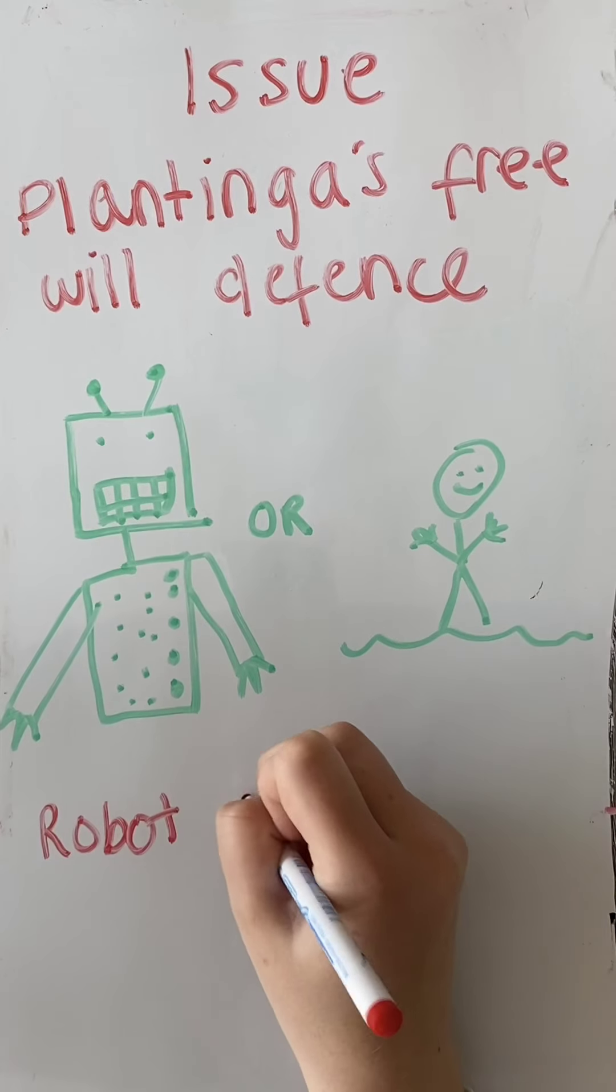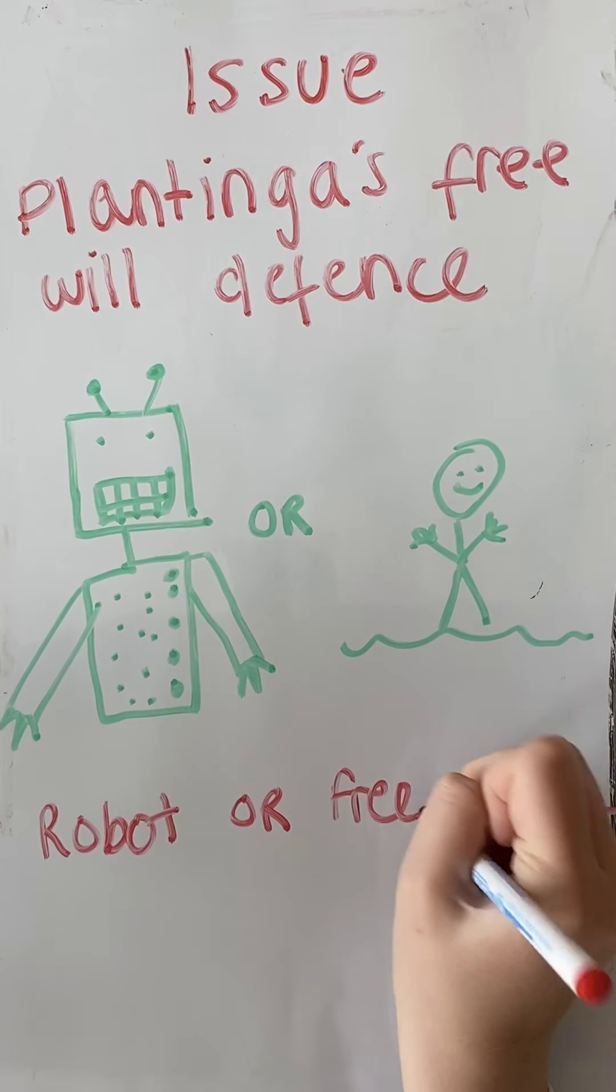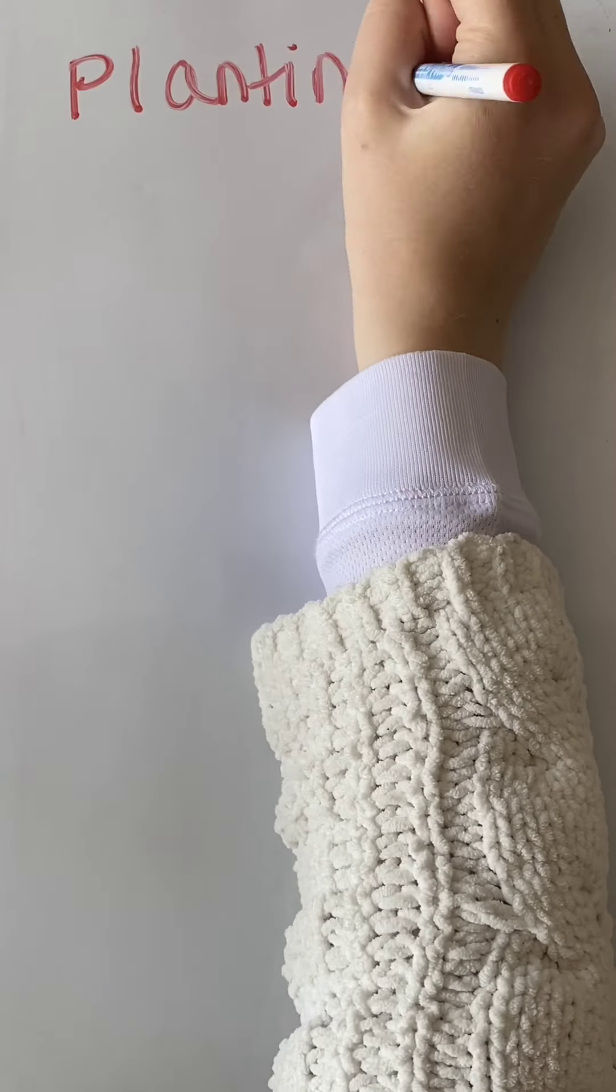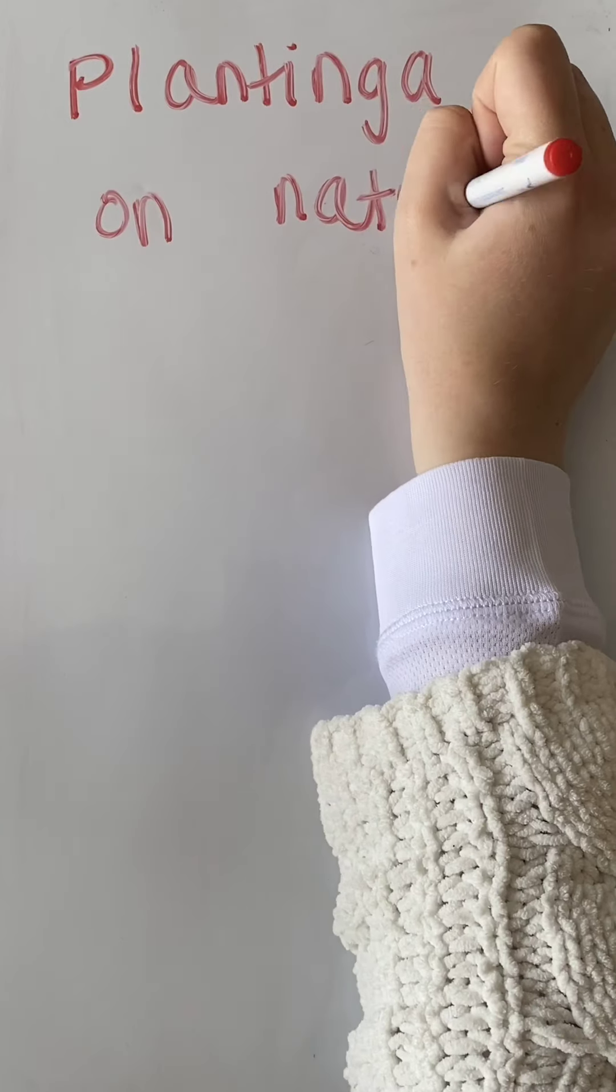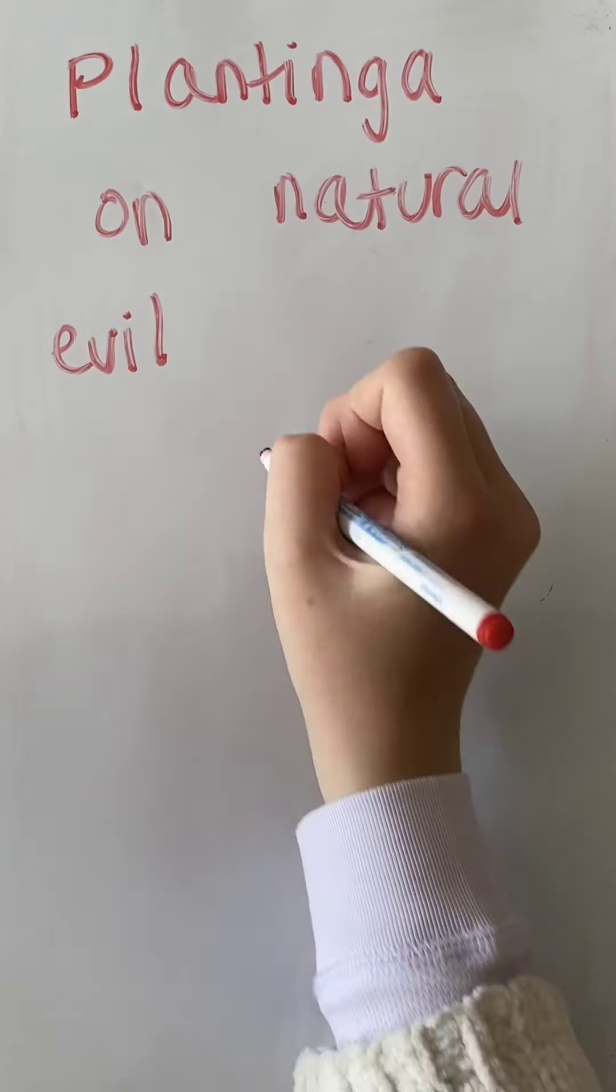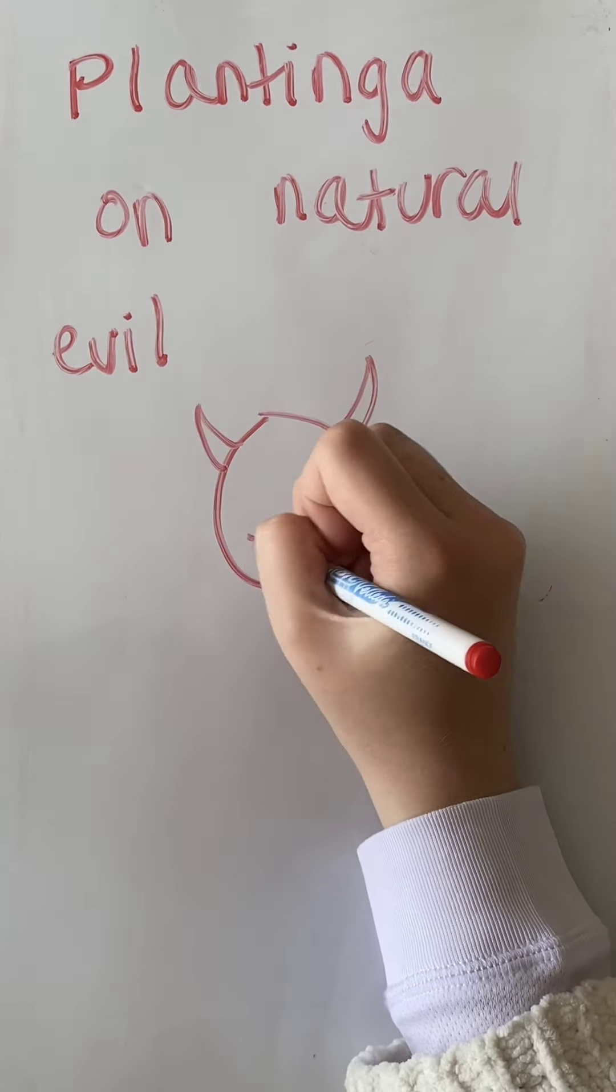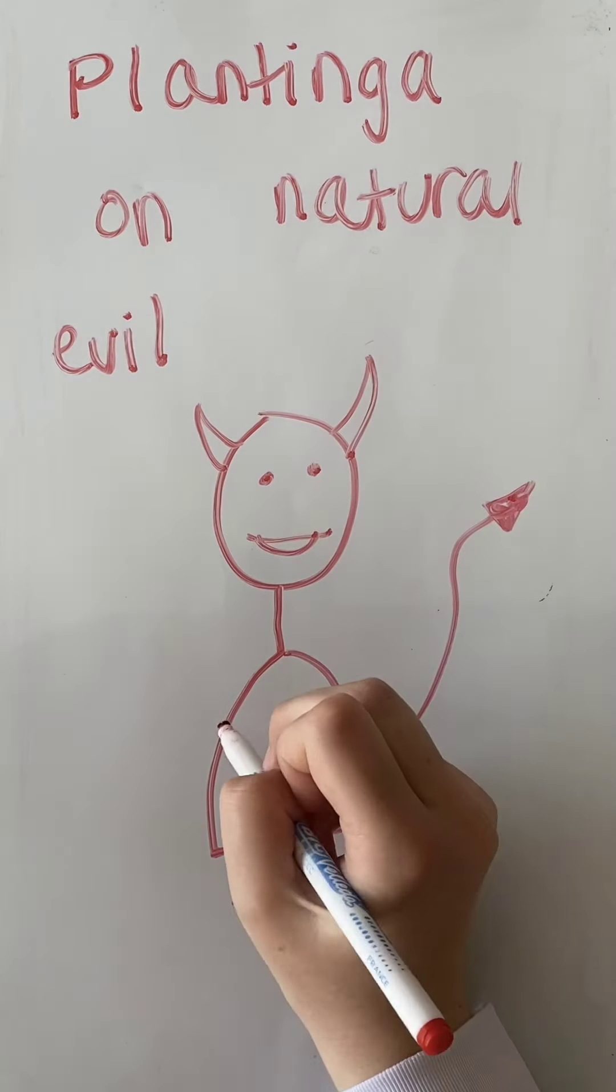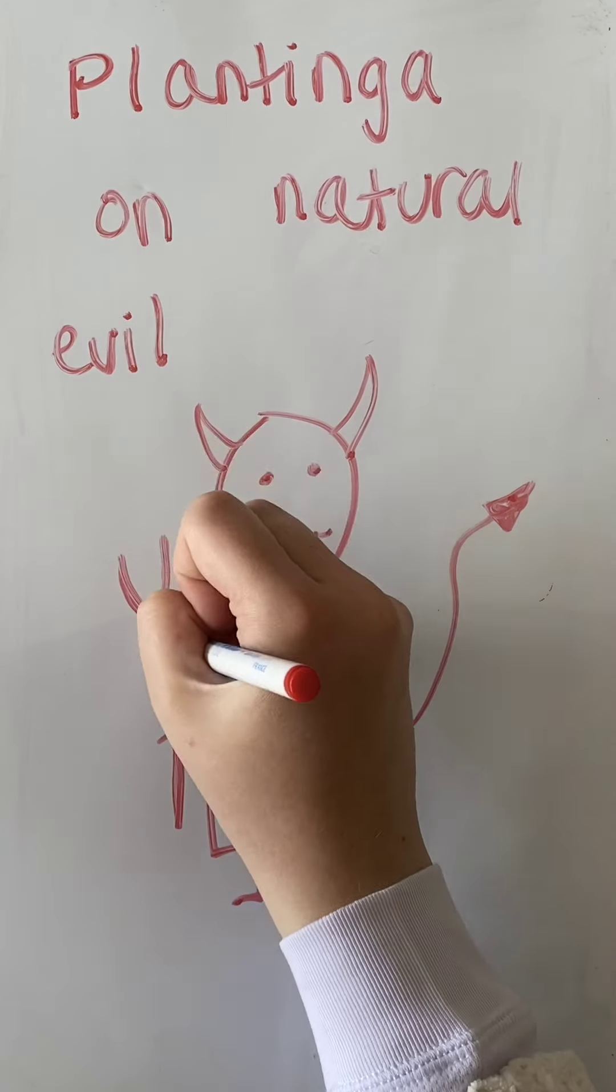Therefore, the existence of an omnipotent, omniscient, and supremely good God is compatible with the existence of evil. Plantinga also argues that this applies to natural evil, as natural evil is simply the result of Satan or demons. This makes natural evil a form of moral evil, and therefore its existence is also explained by the free will of non-humans such as Satan.